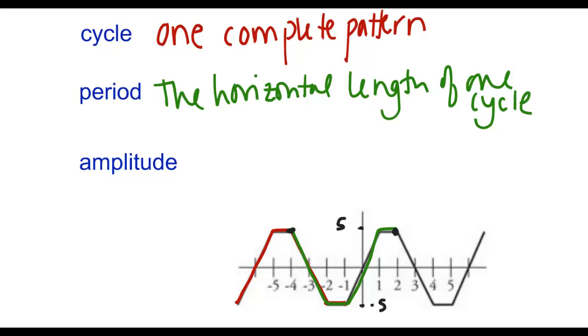What was the horizontal length of that? Well, that went from negative 4 to 2. So the period in this case, for this particular example, is equal to 6. That was the horizontal length.